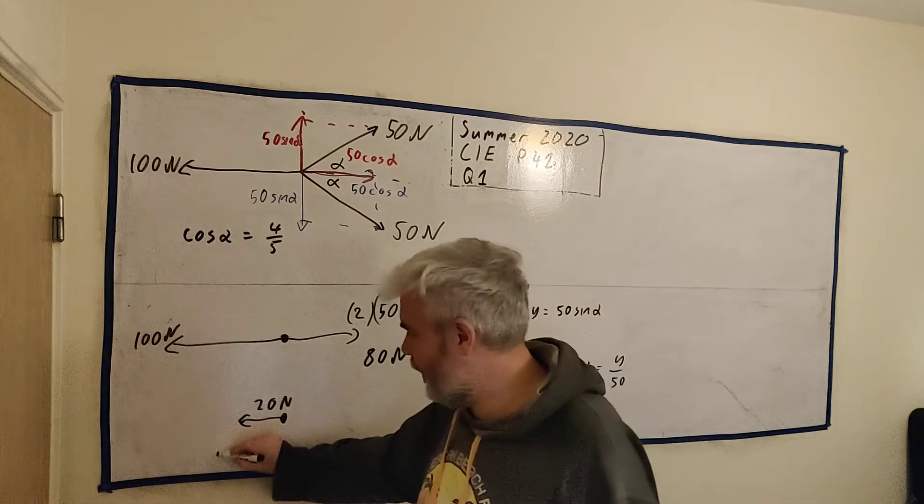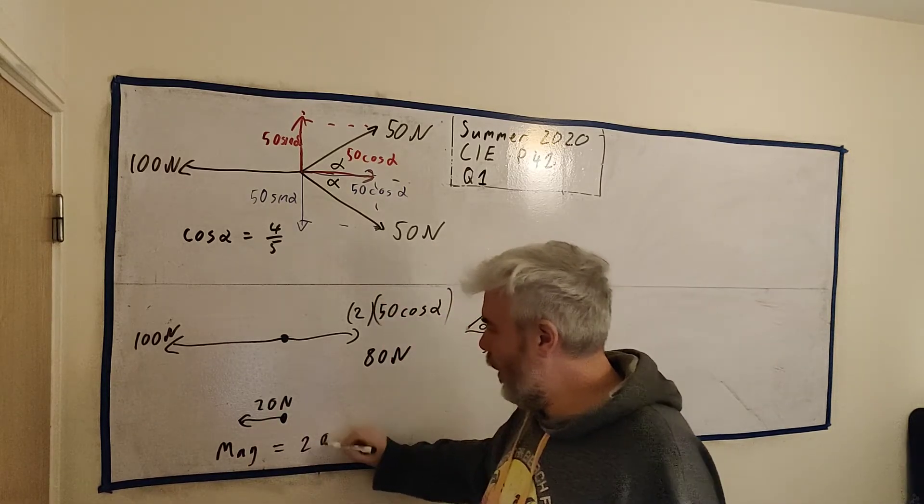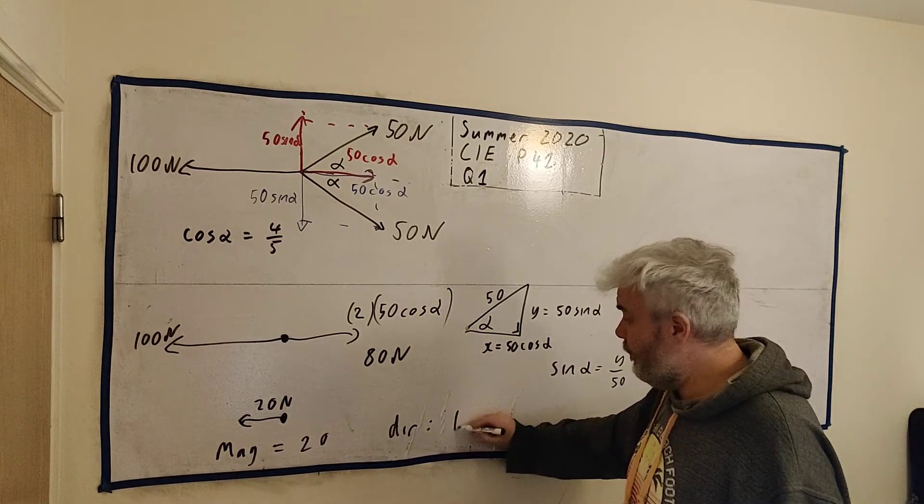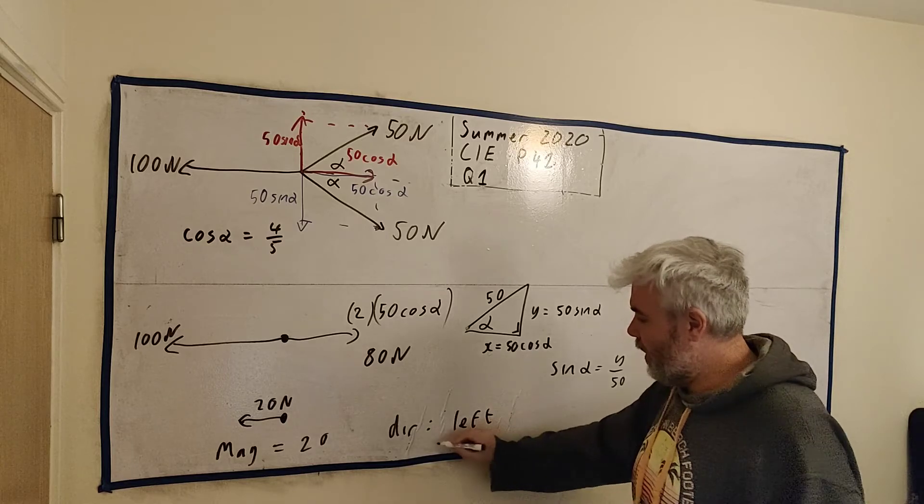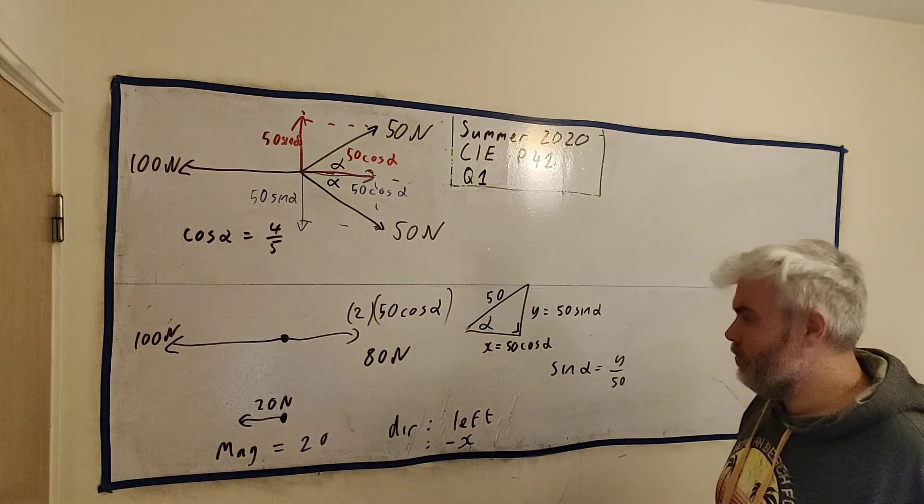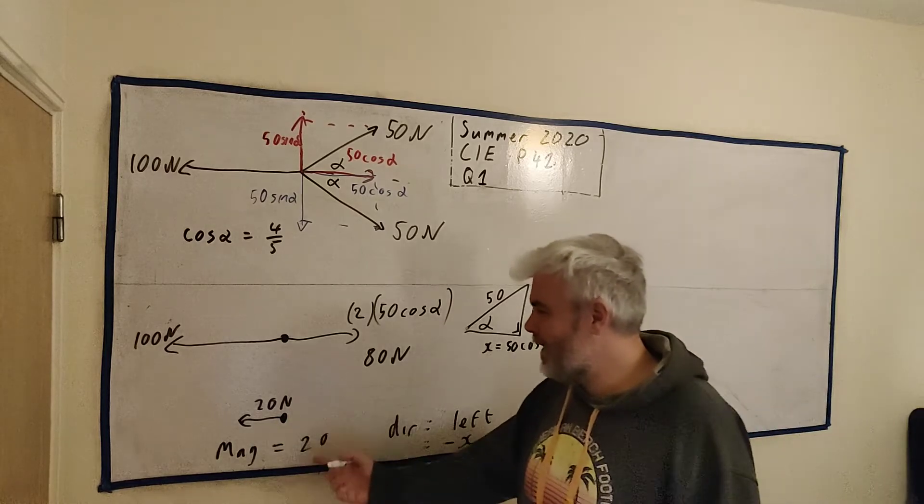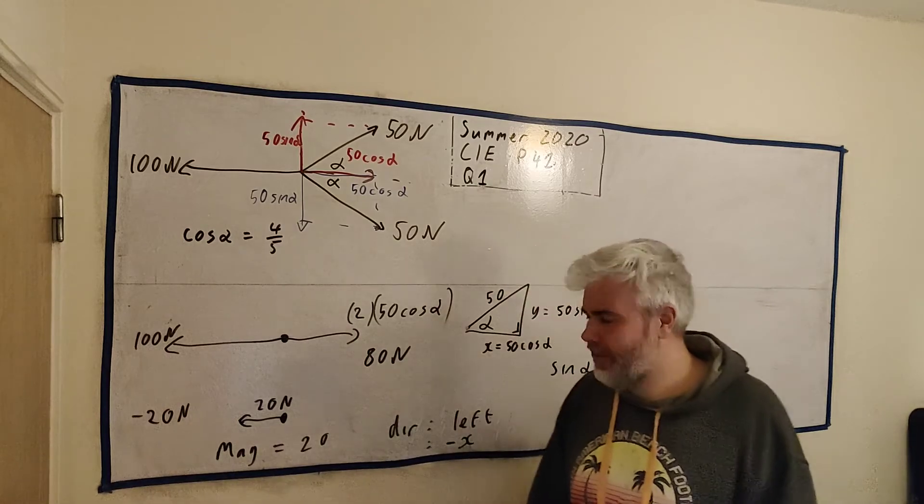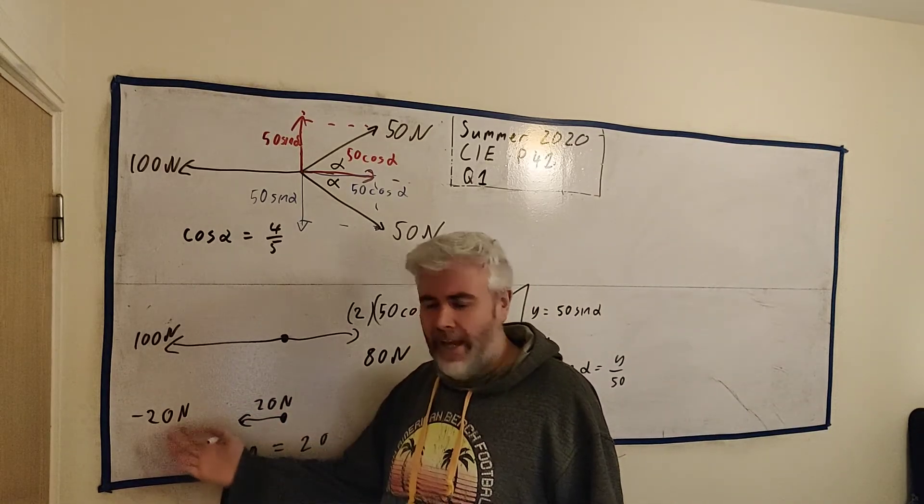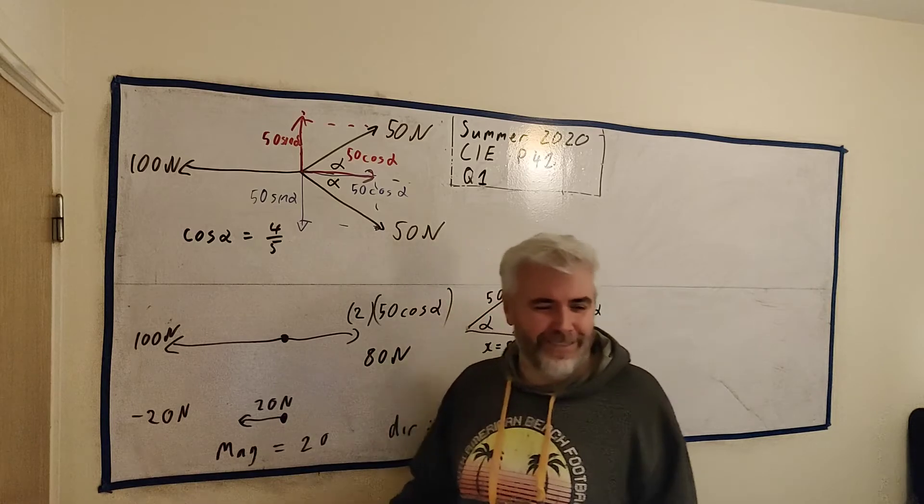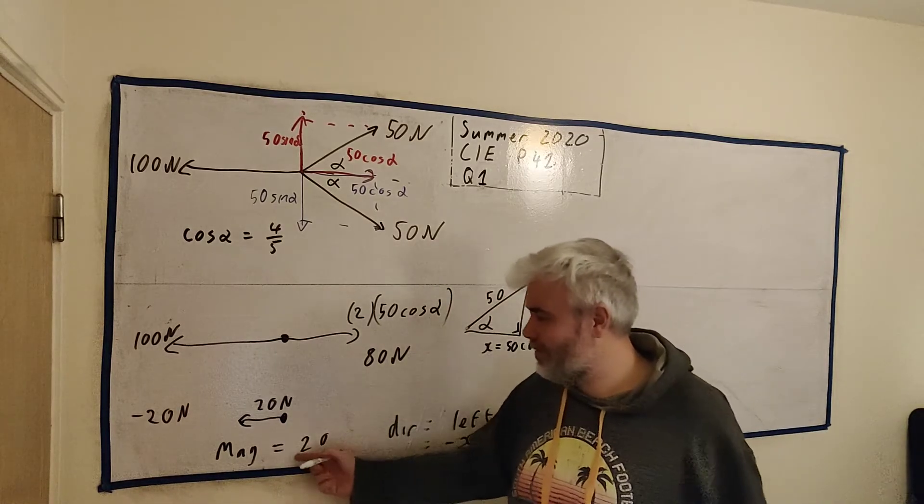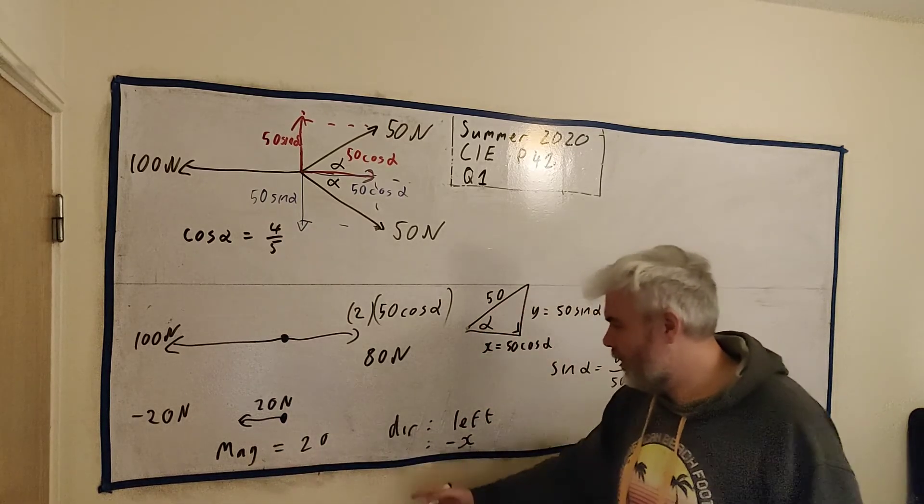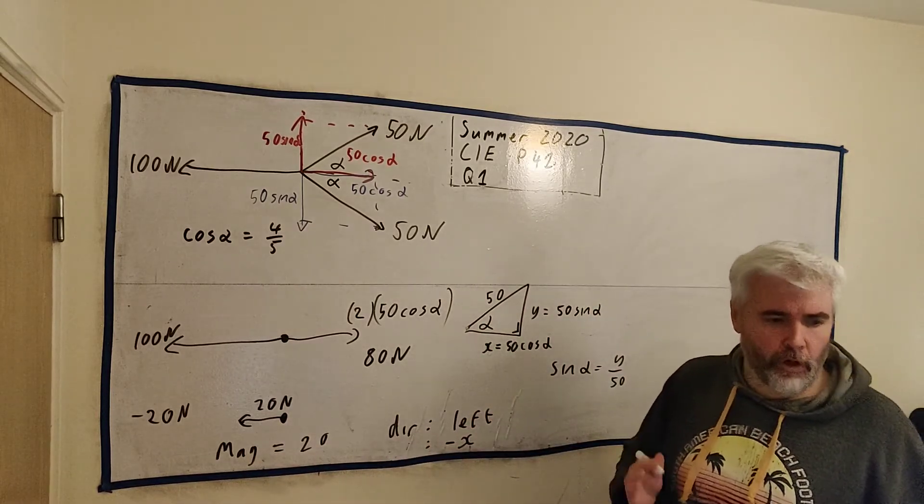You could go ahead and write something like mag is equal to 20, direction is left would be fine. Direction would be minus x, that would be okay as well. You could maybe leave your answer as minus 20, but I don't think they would like that as an answer. They ask for magnitude on its own, so I think it's important you tell them the magnitude is 20. This would be full marks there. Magnitude 20, direction left. That would be perfectly acceptable.